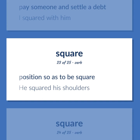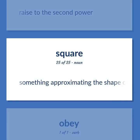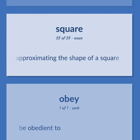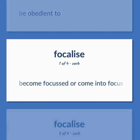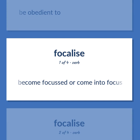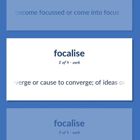Square: position so as to be square — he squared his shoulders. Raise to the second power. Something approximating the shape of a square. Be obedient to. Focus: become focused or come into focus; bring into focus or alignment, to converge or cause to converge, of ideas or emotions.